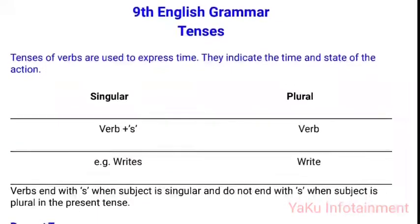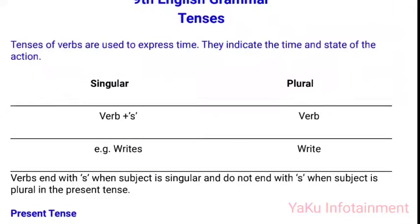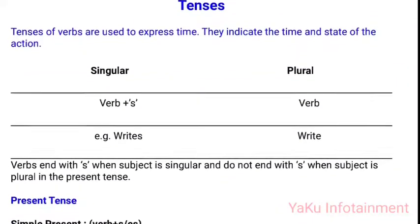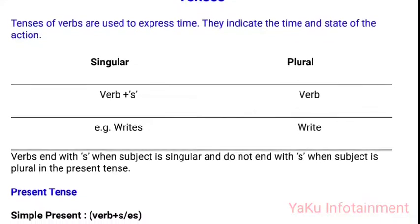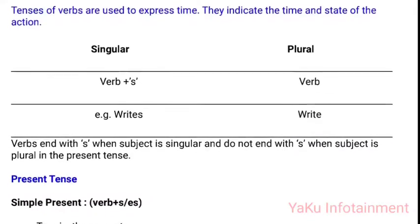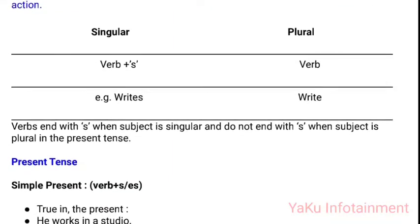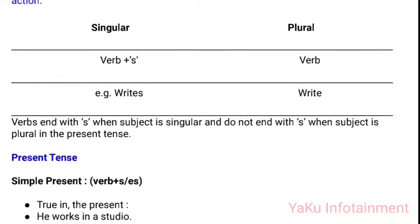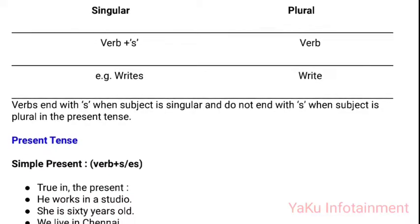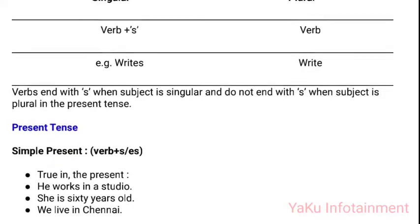9th English Grammar: Tenses. Tenses of verbs are used to express time. They indicate the time and state of the action. Verbs end with S when the subject is singular, and do not end with S when the subject is plural, in the present tense. Singular: verb plus S. Plural: verb. Example — 'rights' (singular), 'write' (plural).